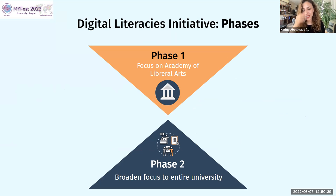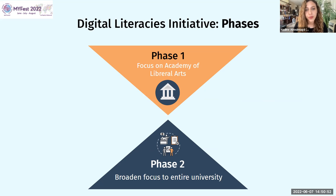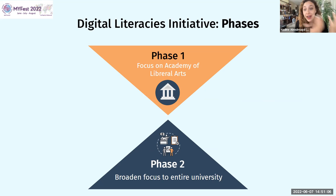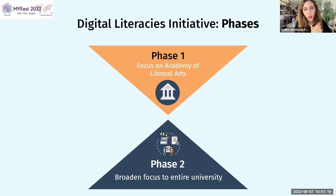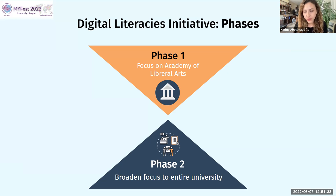When COVID happened, that accelerated everybody's digital literacies — everyone was forced to use digital tools and platforms in critical ways. That's one silver lining of COVID: it really helped with this initiative and got a lot of people on board using the same terminology. We started phase one focused on the Academy of Liberal Arts, where English language instruction, Arabic, and language-related courses live. We ran workshops, focus support, and customized professional development for that group. For phase two, which we're in now, we're broadening the focus to the entire university, and we did a launch event last semester where we officially launched the toolkit.